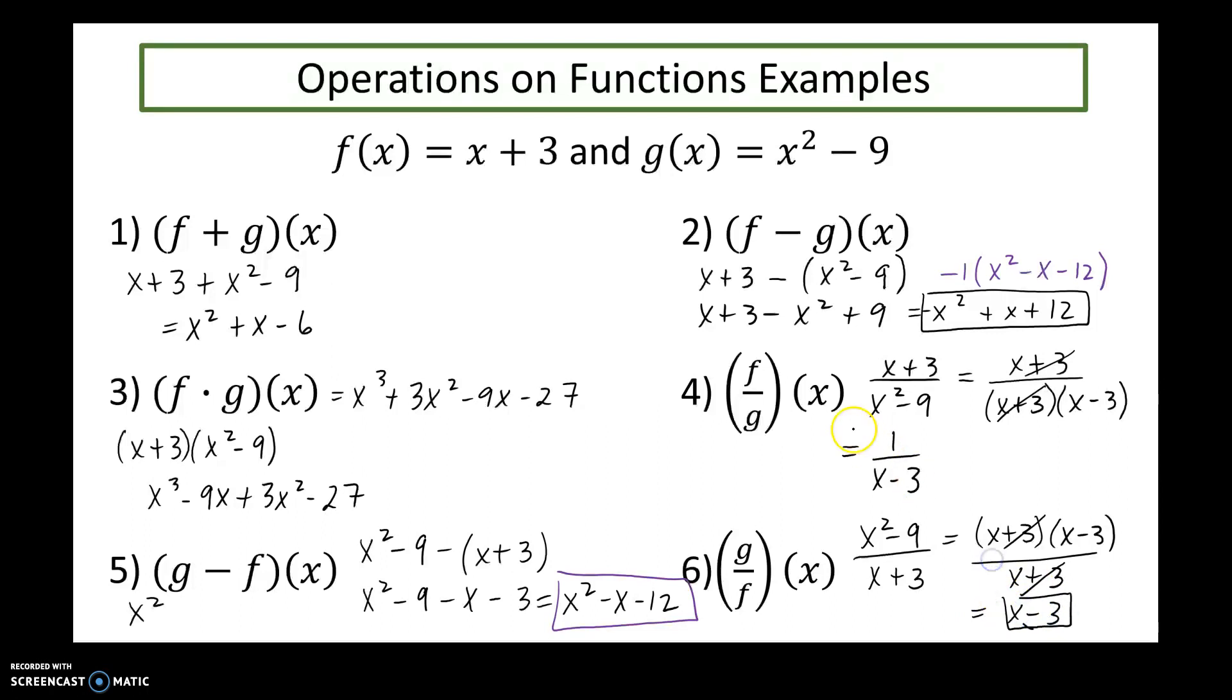Okay, let me talk about four and six specifically. The quotient are the ones that have the domain restrictions. Domain restrictions always come from the original expression, so when I look at that f of x divided by g of x, my domain restriction is that x squared minus nine cannot equal zero. So solving that for x, x cannot equal plus or minus three.